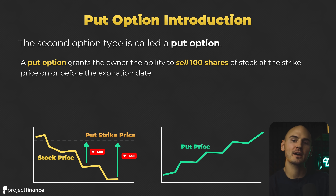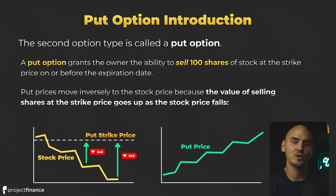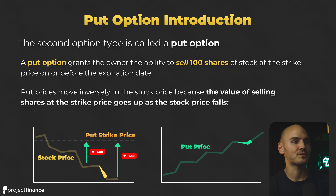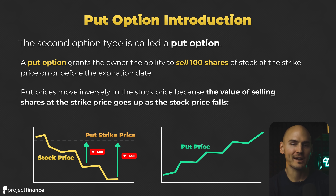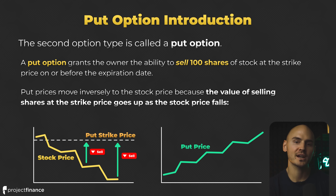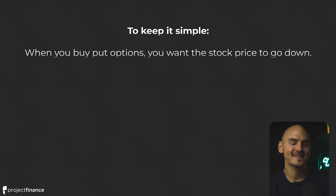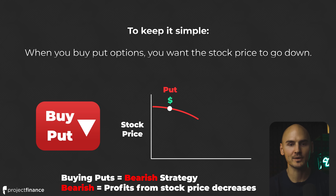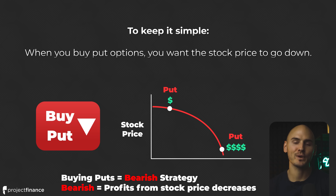Because of the ability to sell 100 shares at the strike price — as opposed to buying 100 shares like a call option can — put option prices move inversely to the stock price. This means their prices go up when the stock price falls, because the value of selling shares at the fixed strike price goes up as the stock price falls. As the stock price falls, since we are able to sell shares at a higher premium to the current stock price, the put option's price will go up. To keep things simple, when you buy put options, you want the stock price to go down. Buying put options is a so-called bearish strategy, because bearish strategies make money when stock prices fall.